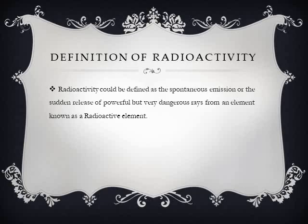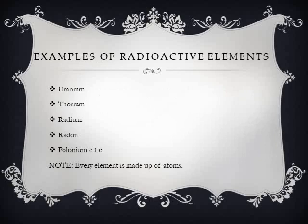The radiations released from these radioactive elements are very powerful and they are very harmful. Because of that, they have a positive side and also a negative side. We have a number of radioactive elements — we have uranium, we have thorium, we have radium, we have radon, we have polonium, among others.